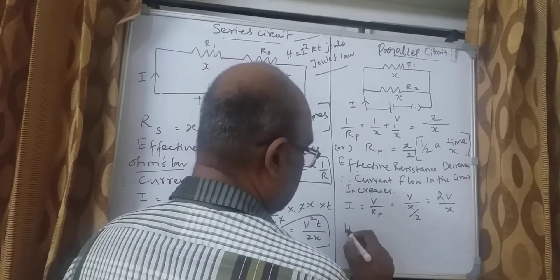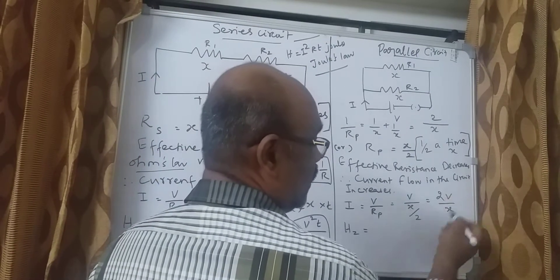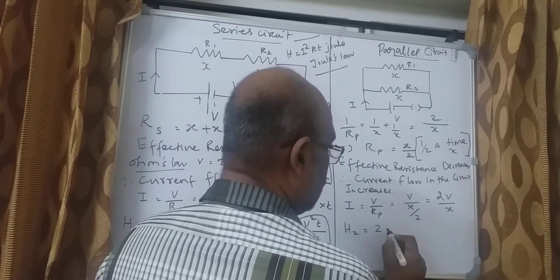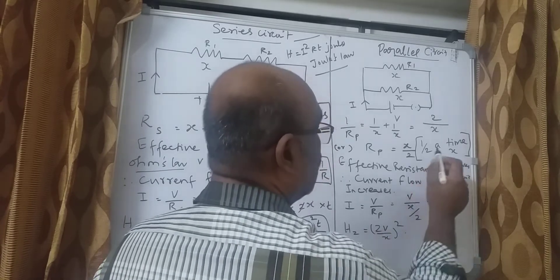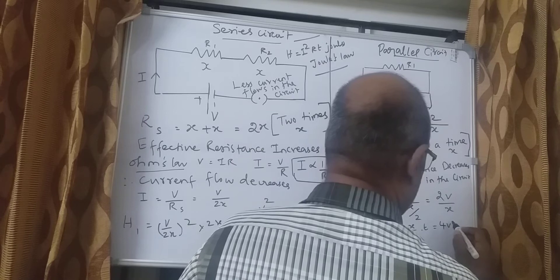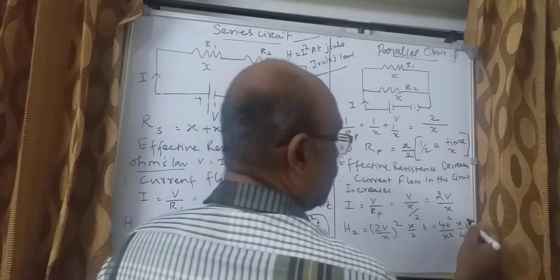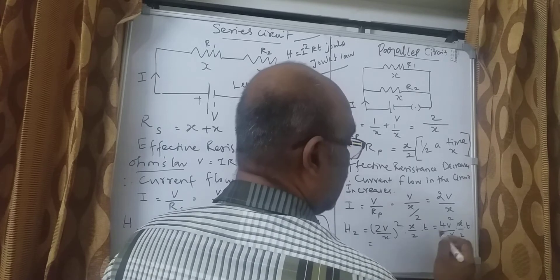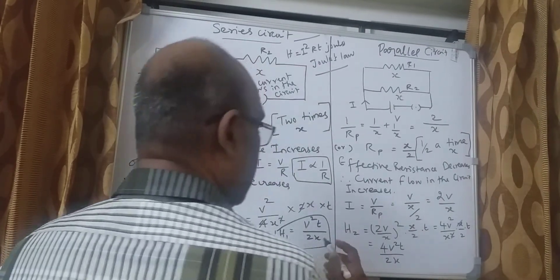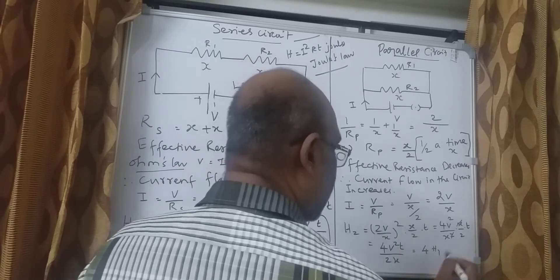Now the heat energy produced in the parallel circuit: H2 = I² × R × T = (2V/X)² × (X/2) × T = (4V²/X²) × (X/2) × T. Simplifying, X cancels, giving H2 = 4V²T/2X, which is 4 times H1. Therefore H2 = 4 × H1.